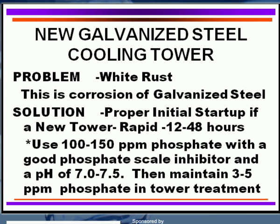Another technique is for a rapid establishment of protection on the galvanized steel, which can usually occur within 12 to 48 hours. This is done by utilizing a high level of phosphate in the cooling tower water — in the range of 100 to 150 parts per million of phosphate — with a good phosphate scale inhibitor so you don't get deposits. Maintain your pH at about seven to seven and a half. Once that has been established, maintain at least three to five ppm of phosphate in the standard continuing cooling tower water treatment program.